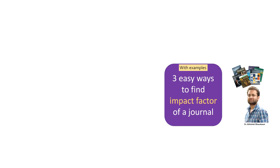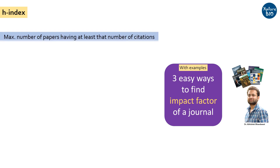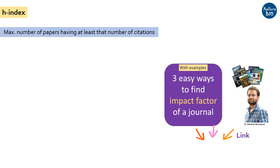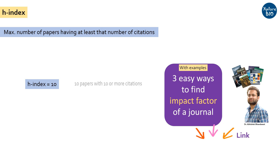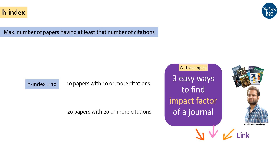The next most widely used citation index is the H index. The H index refers to the maximum number of papers cited by others that particular number of times or more. For example, an H index of 10 means your 10 papers have received at least 10 citations. If 20 of your papers have received 20 or more citations, then your H index will be 20.